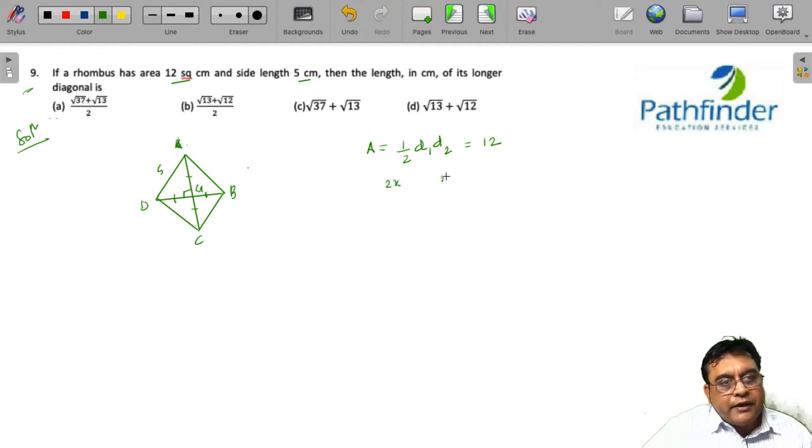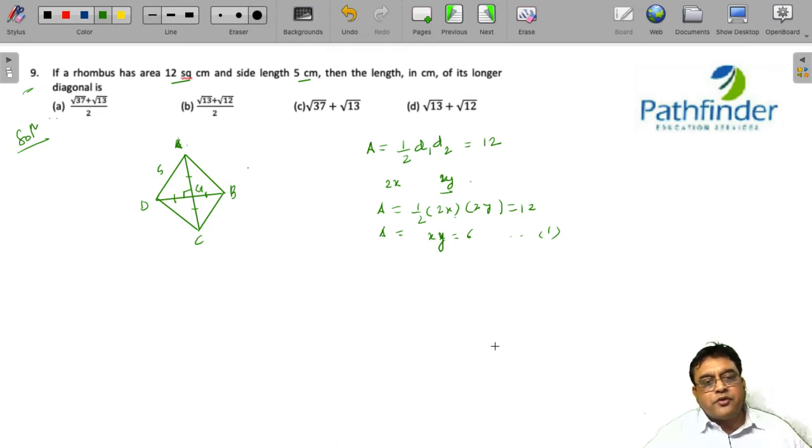Now suppose 2x and 2y are the two diagonals. So I can say half into 2x into 2y must be equal to 12. What does it mean? It means x into y must be 6. This is one information we have.